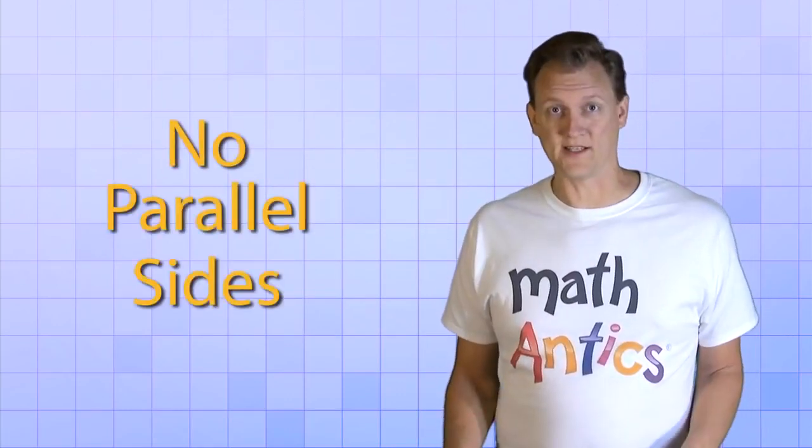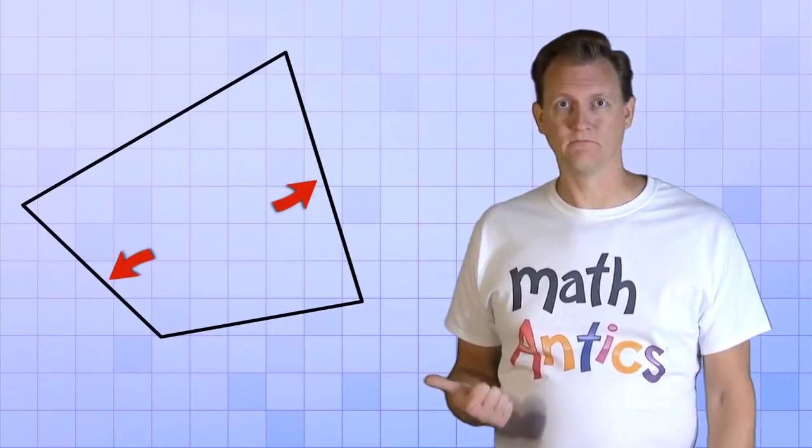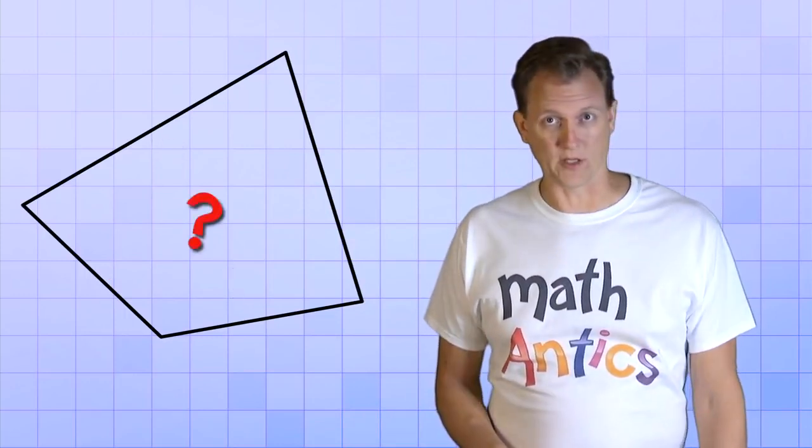Alright then, what about quadrilaterals that have no parallel sides at all, like this one? These opposite sides are not parallel, and these opposite sides aren't parallel either. So what do we call this kind of polygon?